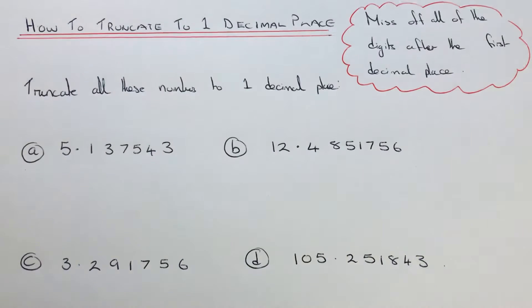This means you don't need to use any rules that you use for rounding numbers off, so truncation is much easier to do. We're just cutting the digits off after the first decimal place.